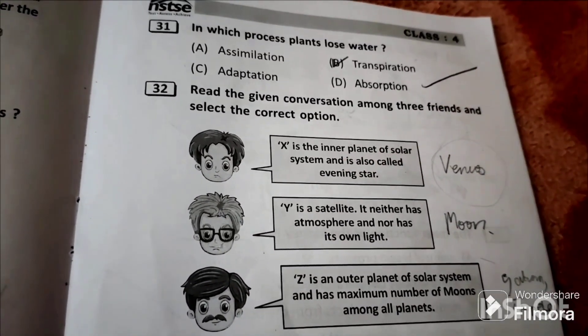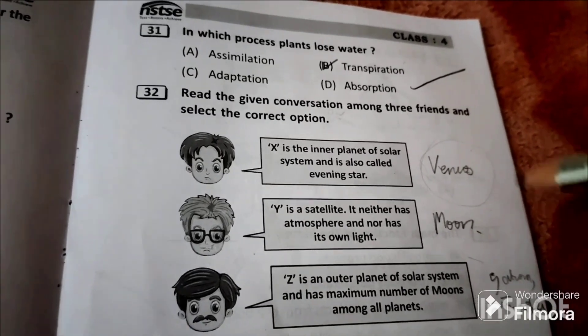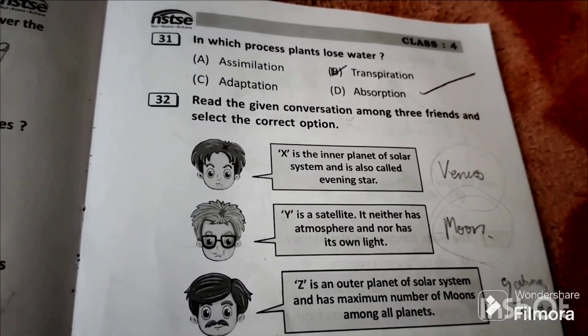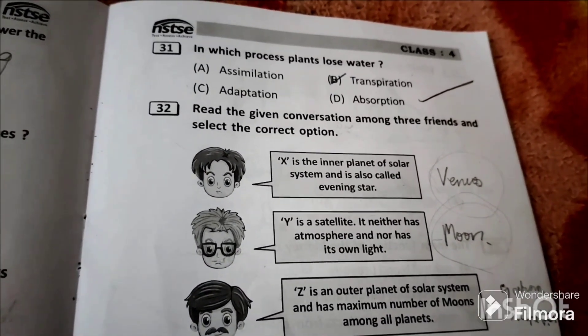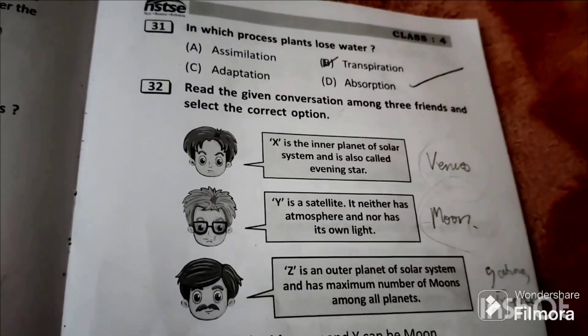Y is a satellite. It neither has atmosphere nor has its own light. So Y refers to Moon because it doesn't have its own light. It's a natural satellite and it takes the light emitted by sun.